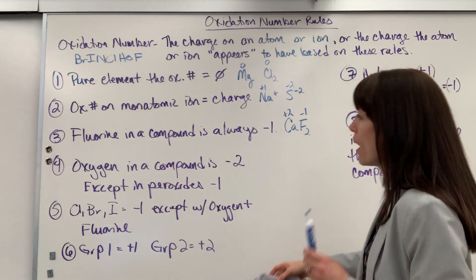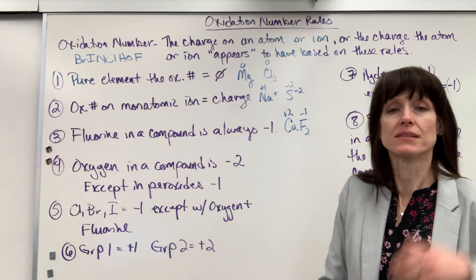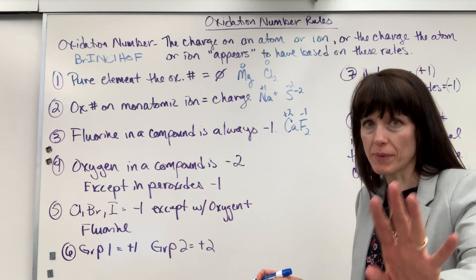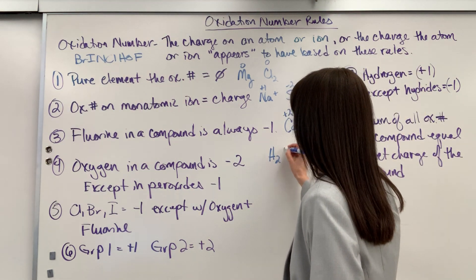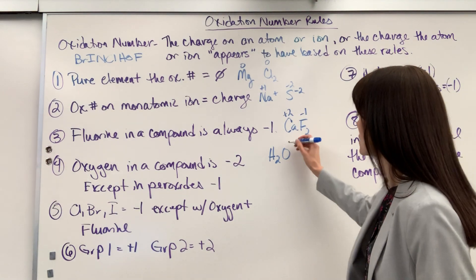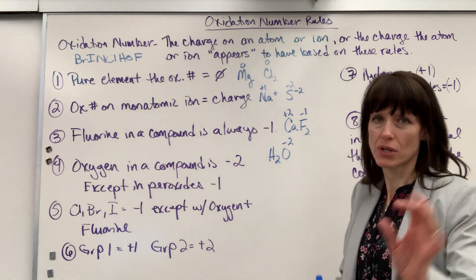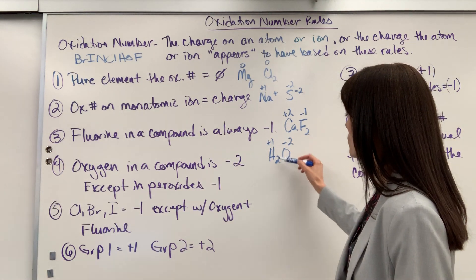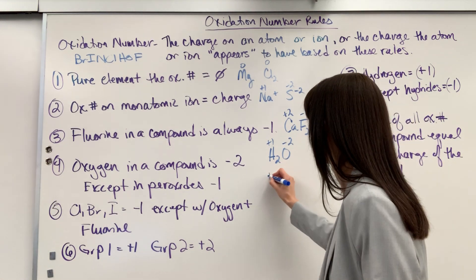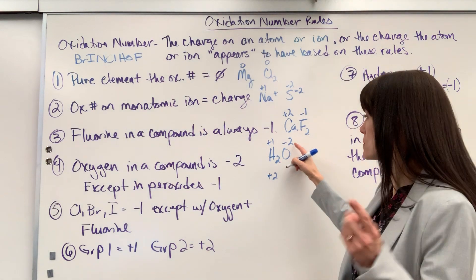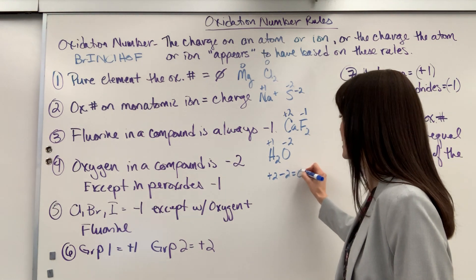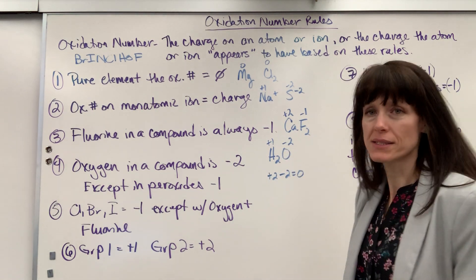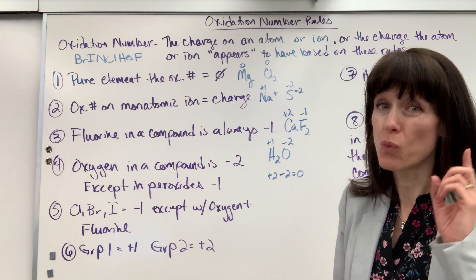Rule four: oxygen in a compound is minus two, and this is going to be true 99% of the time. For example, water (H2O): oxygen is minus two, hydrogen is plus one. So plus one times two gives plus two; one oxygen times minus two gives minus two; plus two plus minus two equals zero. And water's net charge is zero. So oxygen is almost always a minus two.